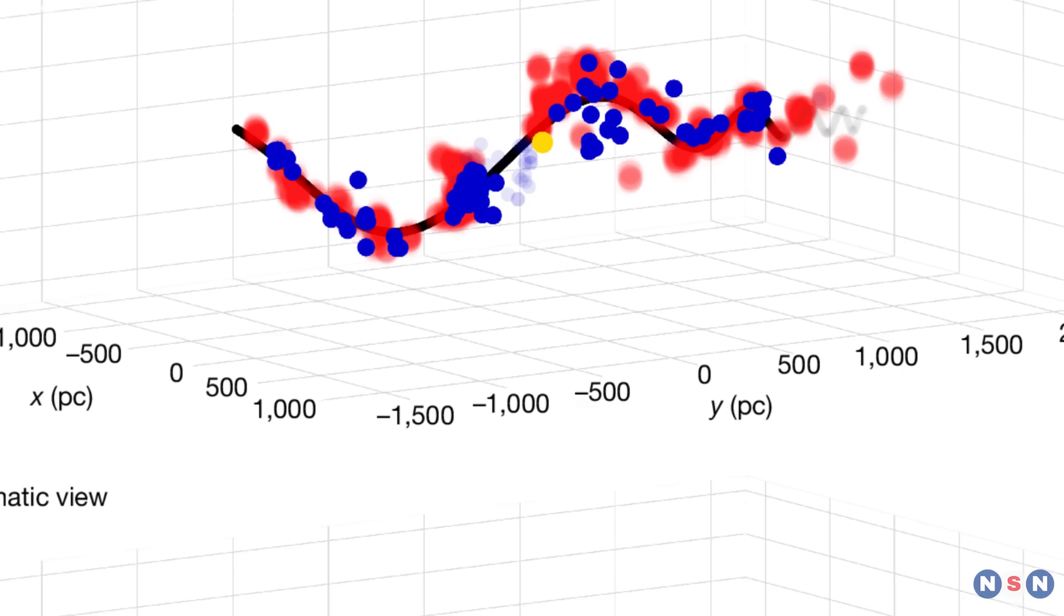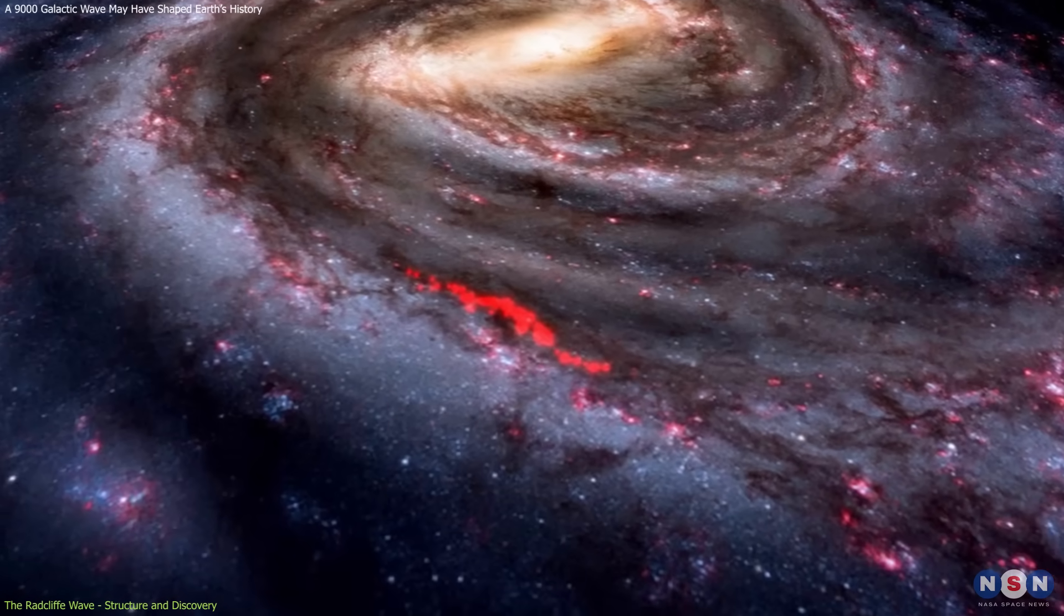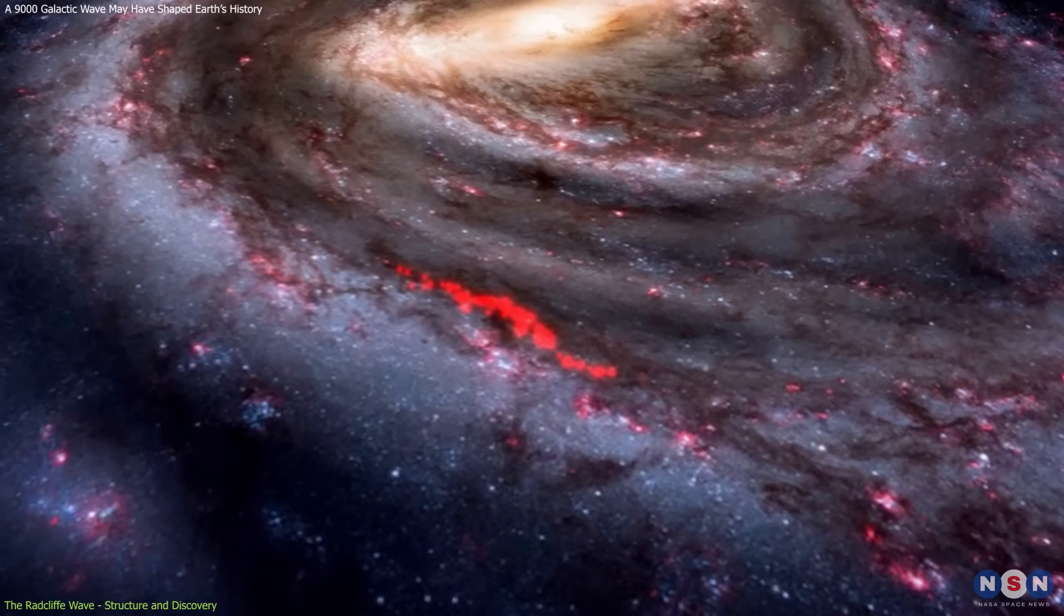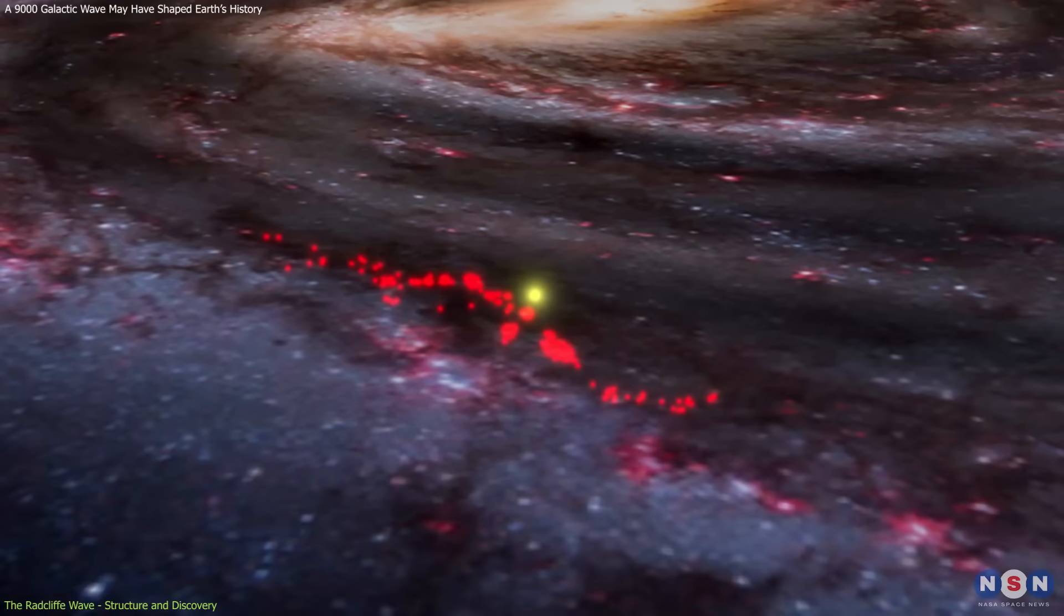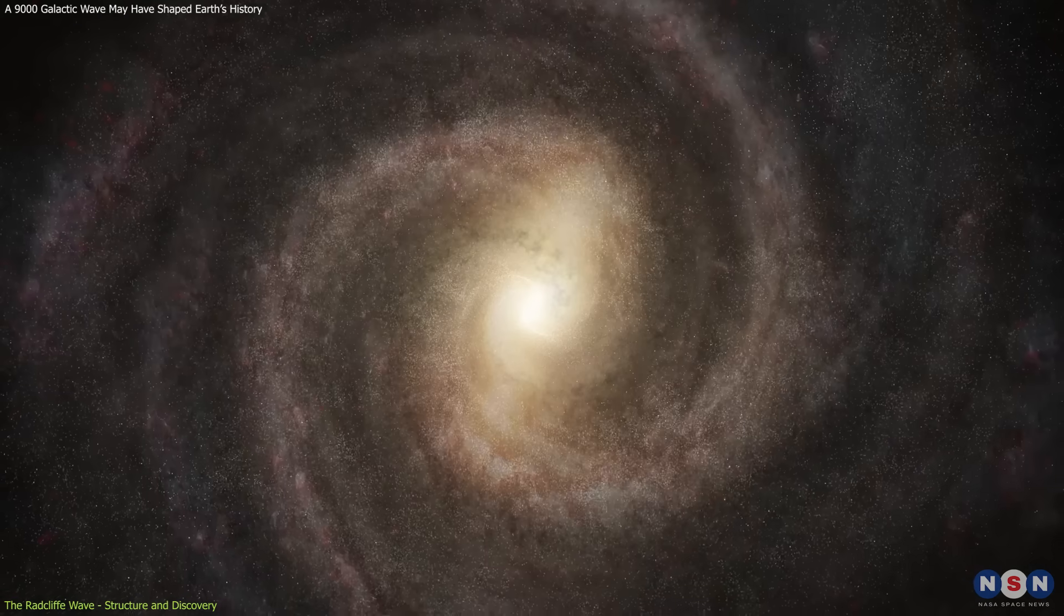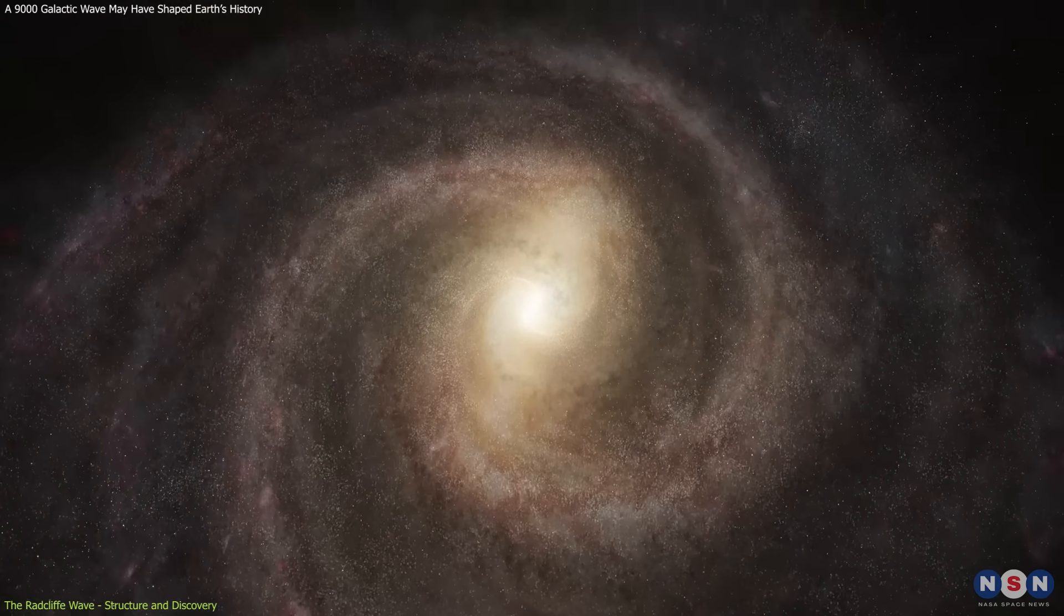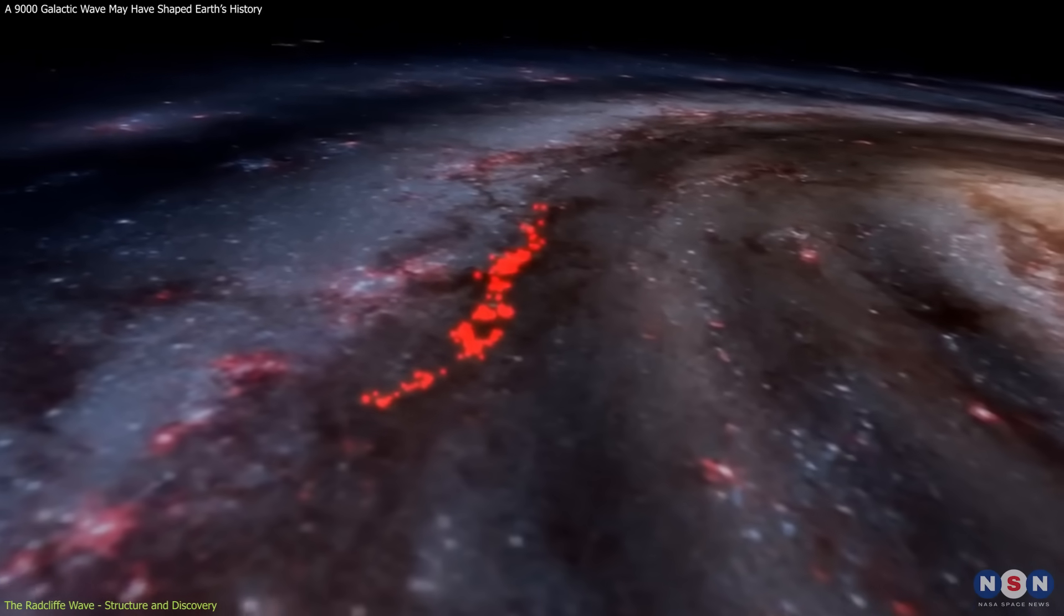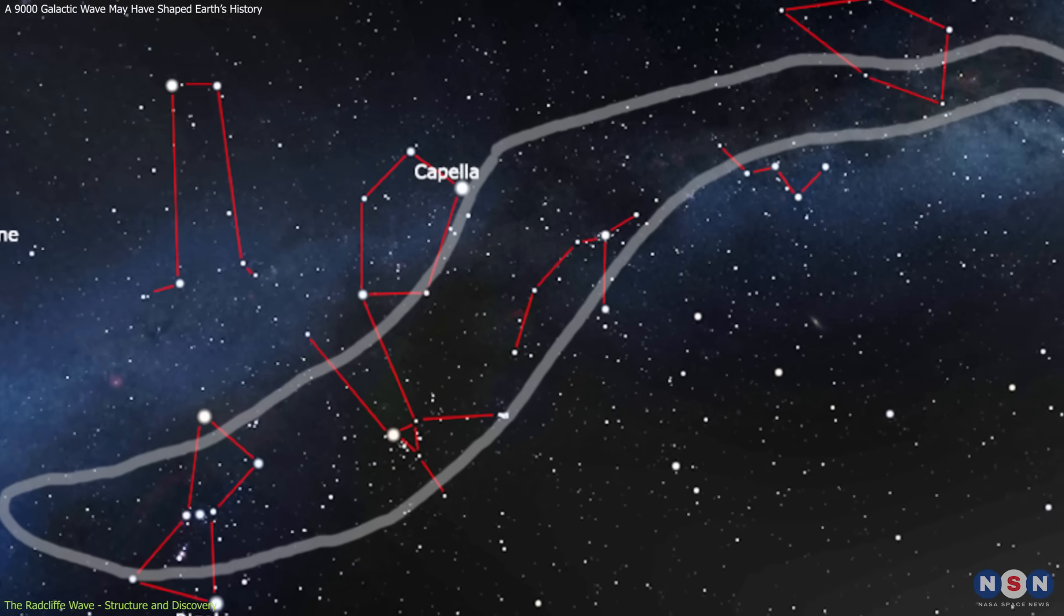Imagine a colossal, undulating ribbon of gas and dust stretching across 9,000 light-years of the Milky Way. This is the Radcliffe Wave, one of the most intriguing galactic structures ever discovered. Unlike the spiral arms of the Milky Way that astronomers have long studied, the Radcliffe wave moves in a coherent wave-like motion, comprising multiple well-known star-forming regions.